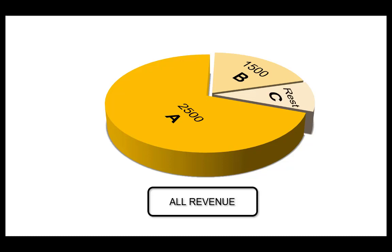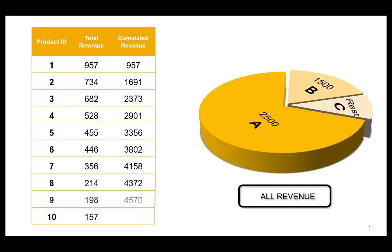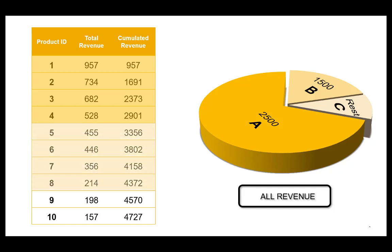If you now run segmentation, the system sorts the products into descending order based on the revenue produced by each and calculates the accumulated values. You can see that these four items at the top together produce $2,500, so they should be assigned to segment A. Further down in the line, these four produce $1,500, so they'll belong to segment B, and the rest will be in segment C.